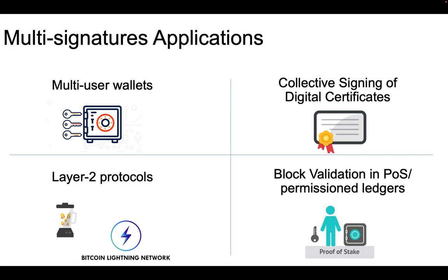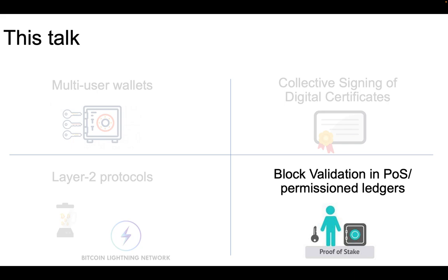Multisignatures have numerous applications in the blockchain space and beyond. They can be used to build multi-user wallets requiring authorization by more than one user to spend an asset. They have found applications in layer-two protocols — for example, in mixing services or the Lightning Network. They allow collective signing of digital certificates, and they are also very useful for block validation in proof-of-stake protocols. The case of block validation in proof-of-stake protocols was the inspiring scenario for our work.